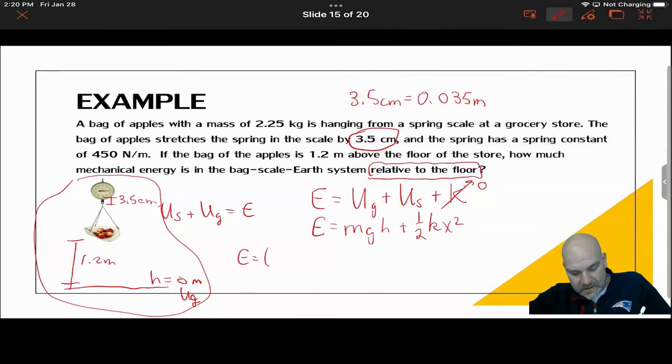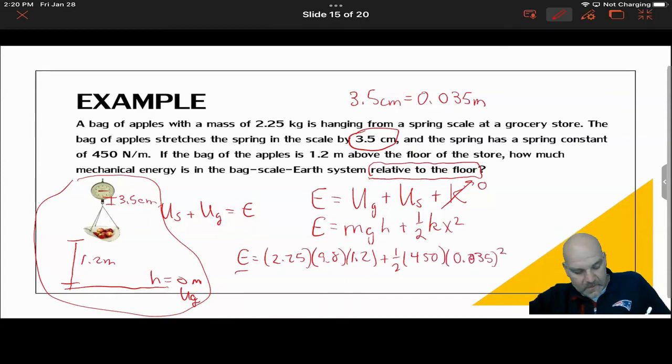So E is equal to 2.25 times 9.8 times 1.2 plus 1/2 times 450 times 0.035 squared. And so the total mechanical energy that the apples will possess is 26.7 joules.